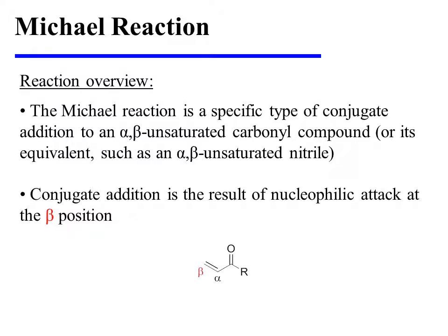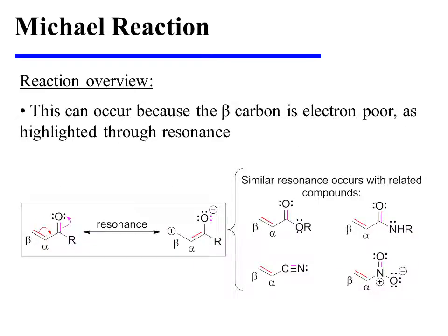The Michael reaction is a specific type of conjugate addition to an alpha-beta unsaturated carbonyl compound, or its equivalent, such as an alpha-beta unsaturated nitrile. Conjugate addition is the result of nucleophilic attack at the beta position of an alpha-beta unsaturated system. This can occur because the beta-carbon is electron-poor, as highlighted through resonance.